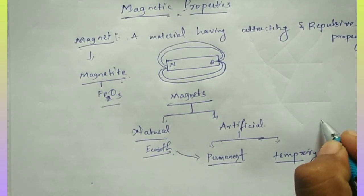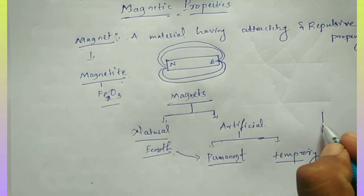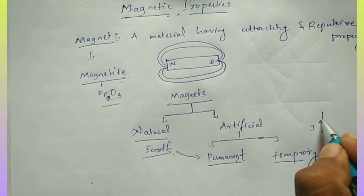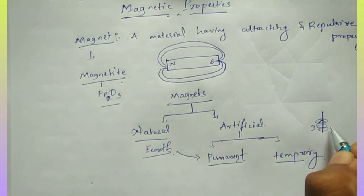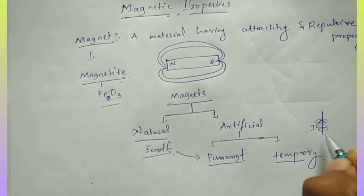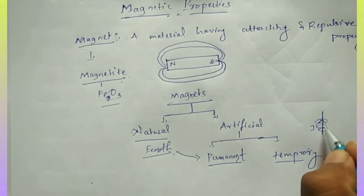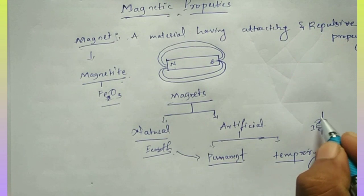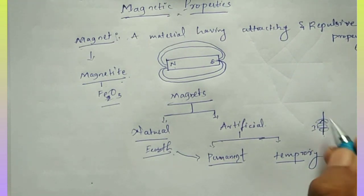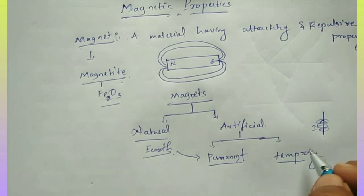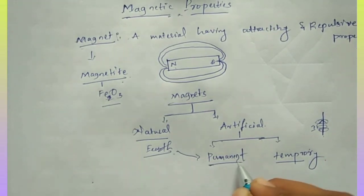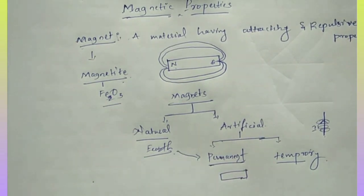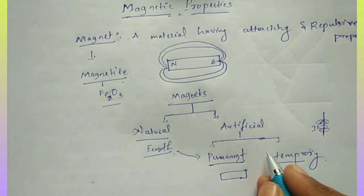For example, for temporary magnets, if you take a current-carrying conductor, when the current is flowing inside this conductor, at that time this conductor behaves as a magnet — it has a temporary magnetic field surrounding it. That is called a temporary magnet. Permanent magnets, such as a bar magnet, are made up of iron ore.